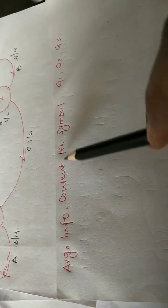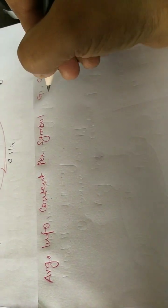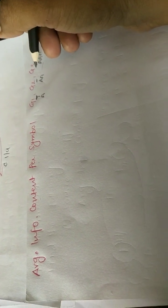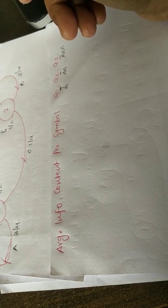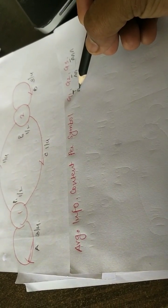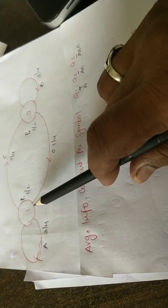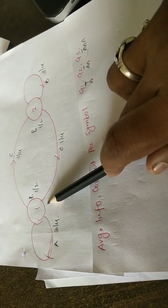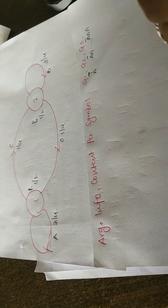Now we move to the second step: calculating average information content per symbol G1, G2, G3. Here, one, two, and three refer to the length. If the symbol is 'a', the length is one; if it is 'aa', the length is two; if it is 'aaa', the length is three. To calculate this, we need to draw the tree diagram for the given graph. The tree diagram is always drawn as per the source states, so since we have two source states, we will draw two tree diagrams.